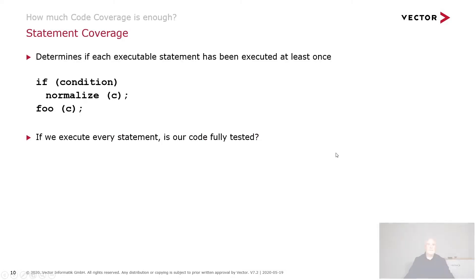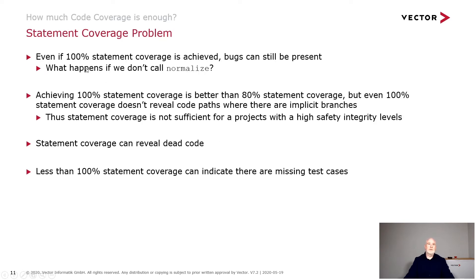So how much code coverage is enough? Starting with statement coverage: this determines if each statement has been executed at least once. If we have three statements — an if condition and some function calls — and we get 100% statement coverage, is our code fully tested? No. Even at 100%, bugs can still be present. For example, if we didn't call normalize and went down the implicit false of the if, code that relies on normalize being called won't work. So 100% statement coverage doesn't reveal those implicit code paths, though it's better than 80% and can help reveal dead code and missing test cases.